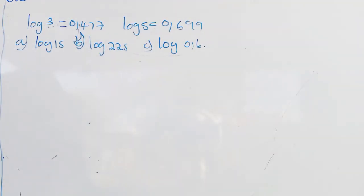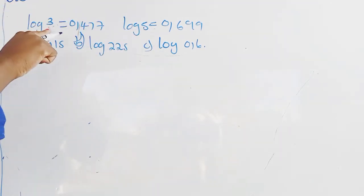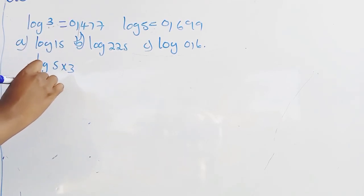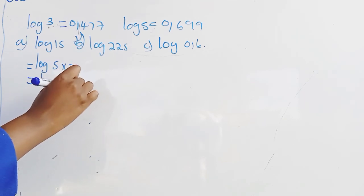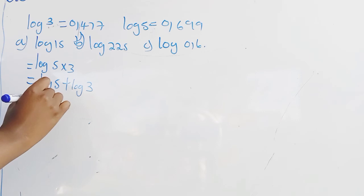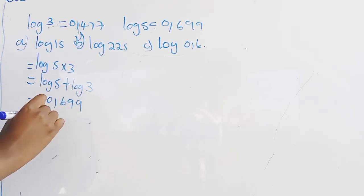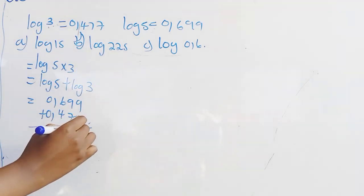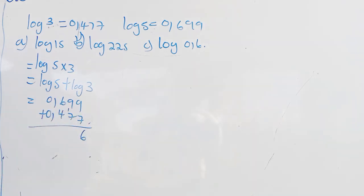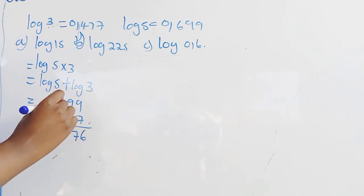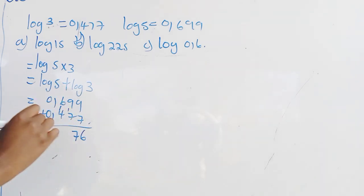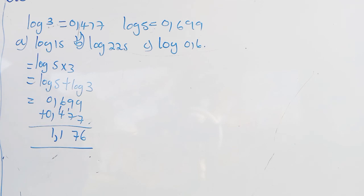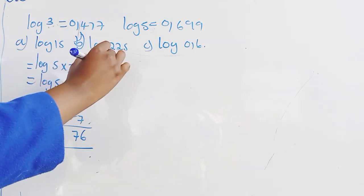For log 15: we write it as logarithm of 5 times 3, which is the same as logarithm of 5 plus logarithm of 3. Log 5 is 0.699 and logarithm of 3 is 0.477, so we add these two numbers together. 9 plus 7 is 16, carry 1; 9 plus 7 is 16 plus 1 is 17, carry 1; 6 plus 4 is 10 plus 1 is 11 — giving us 1.176. So logarithm of 15 equals 1.176.